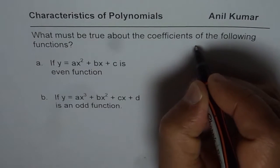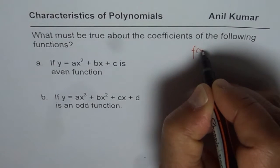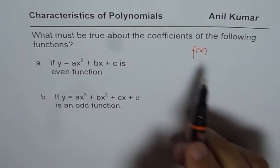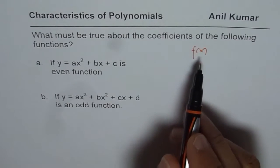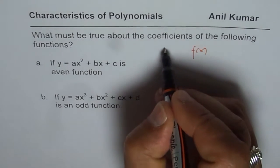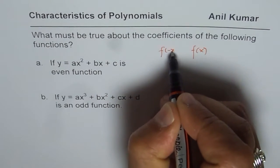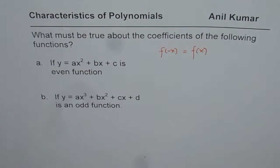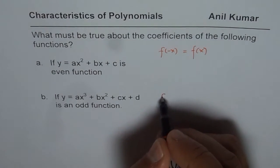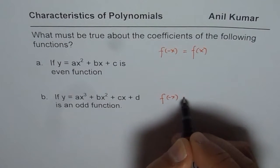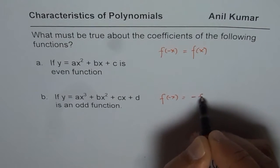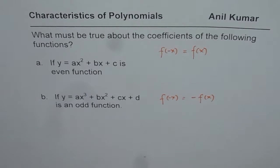I hope you remember, even functions are symmetric about the y-axis, and if you find f of minus x, then that should equal f of x. For an odd function, f of minus x equals minus f of x, and these functions are symmetric about the origin. So they have rotational symmetry. You can pause the video and answer the question.